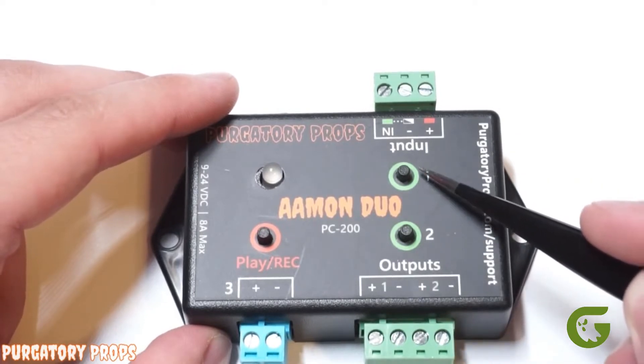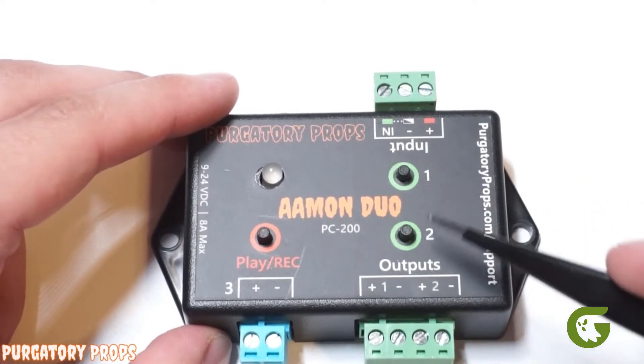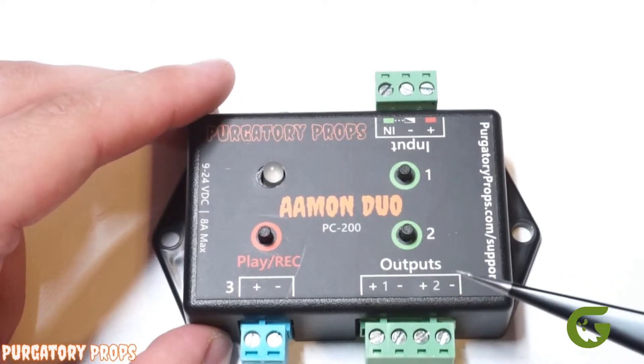Then over here we have buttons one and two, and those are used to control outputs one and two when you're recording.